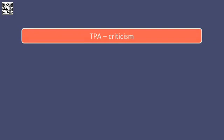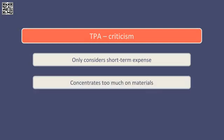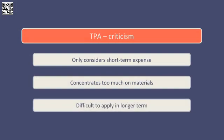There are a number of criticisms of the throughput accounting ratio. It only considers the short term when operating expenses are mainly fixed. It concentrates too much on materials, excluding other costs that might impact on the profitability of the products being produced based on the ranking approach discussed. And it is more difficult to apply in the longer term when labour costs are classed as a variable cost.